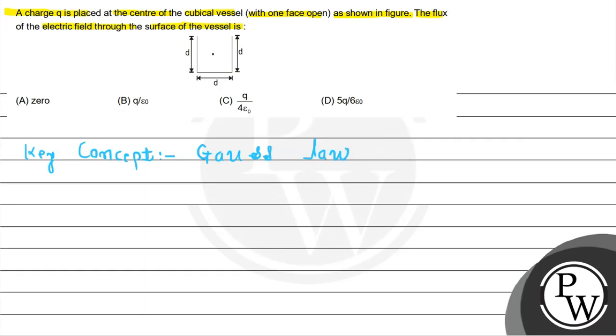Okay, so according to Gauss law, electric flux through a closed surface is given by φ equals Q enclosed divided by epsilon naught, where epsilon naught is the permittivity constant and Q enclosed is the charge inside the body.